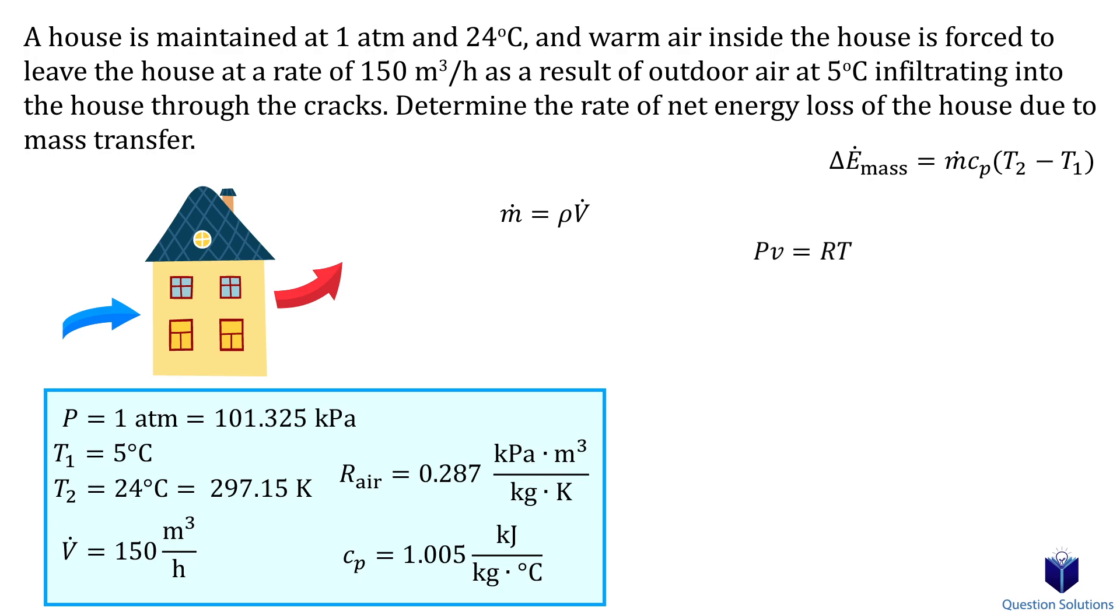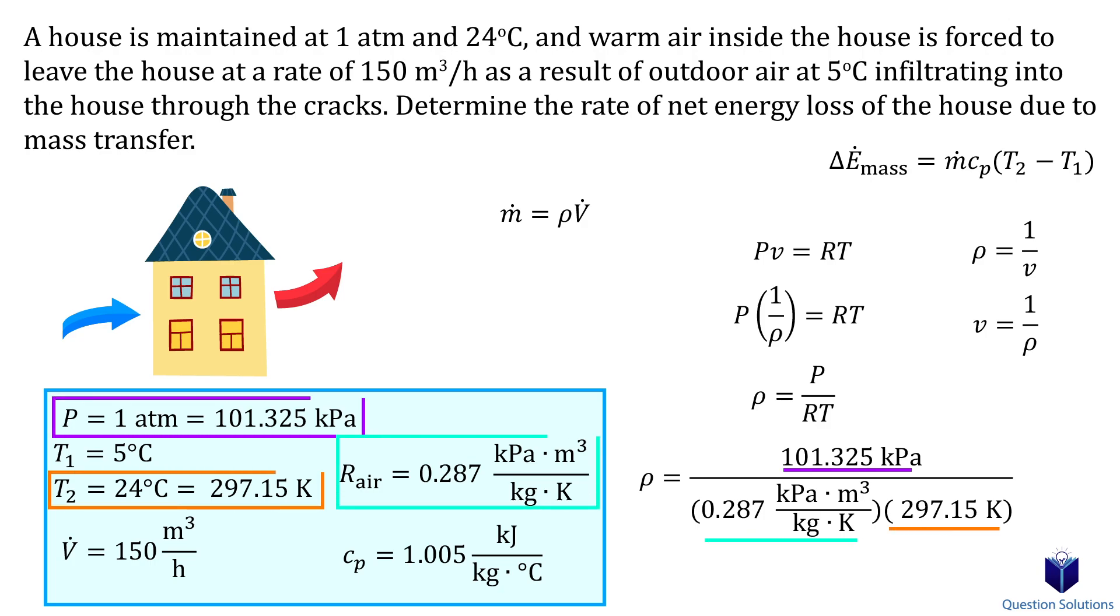Since we want to find the density using this equation, we need to replace specific volume with density. Remember that density ρ = 1/v, which means specific volume v = 1/ρ. We can replace it in our ideal gas equation like this and isolate for density. Now we can plug our values in. Keep in mind that we're looking at the inside of the house, so our temperature is 24°C or 297.15 K. Let's solve, and that's our density.